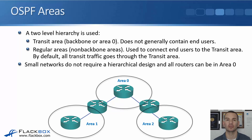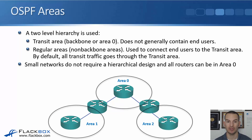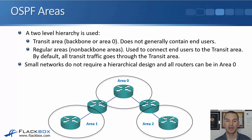With OSPF areas we have a two-level hierarchy. At the top level we have the transit area, also known as the backbone or area zero. It does not generally contain end users in a multi-area network. Then we have our regular areas, also known as non-backbone areas, which hang below area zero and are used to connect end users to the transit area. By default all transit traffic goes through area zero, so traffic between area one and area two must always pass through area zero — it cannot go directly between them.